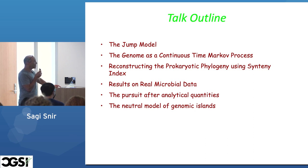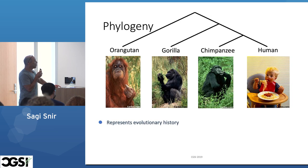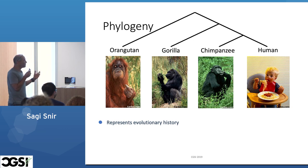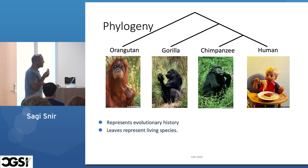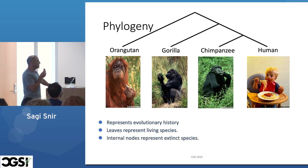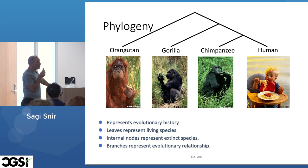Some parts are even new here. So, what is phylogeny? It represents the evolutionary history — you should all be very acquainted with that already. Leaves represent living species, internal nodes represent extinct species, and branches represent evolutionary relationships. The trees are some sort of history, and also a model for generating that history.